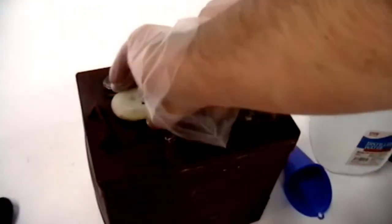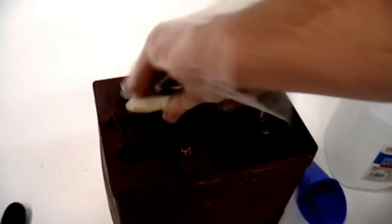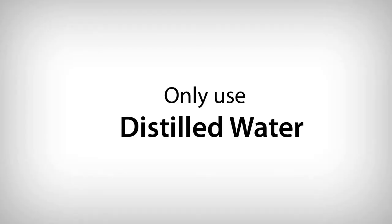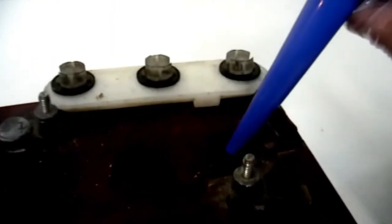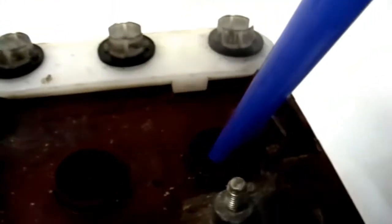On flooded or wet batteries, check the water levels. The water level should be high enough to just cover the plates. If water is needed, only use distilled water and do not overwater as it can spill and the electrolyte is very corrosive.